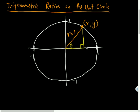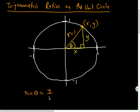How far over is this point? X. How high up is this point? Y. So the overness of this triangle is X units long, and the rise is Y units high. From angle theta's perspective, what is sine of theta equal to? Sine of theta would be Y over 1, or Y over R — it would be Y.